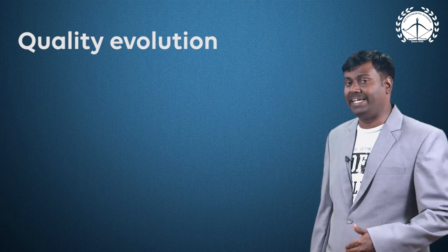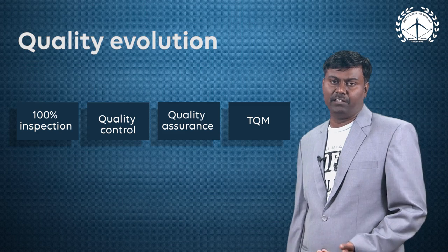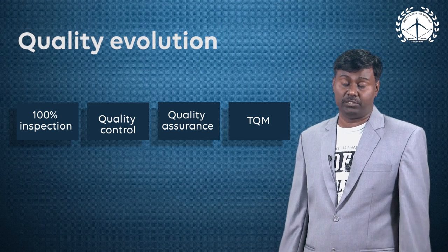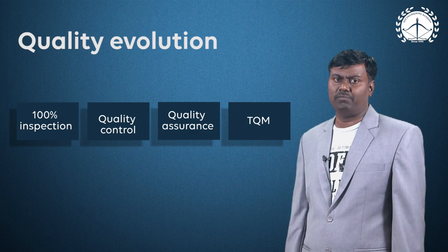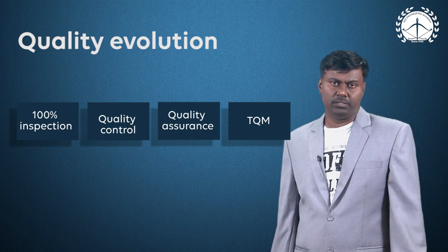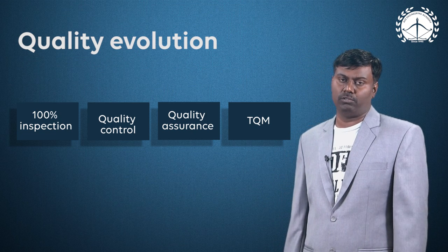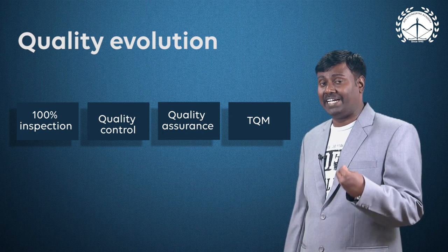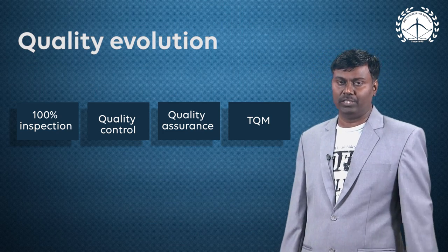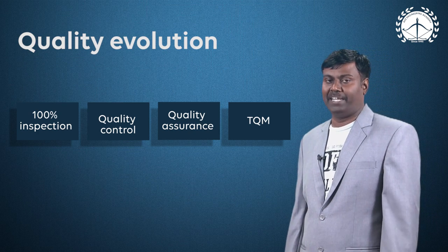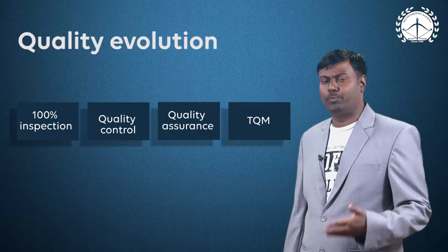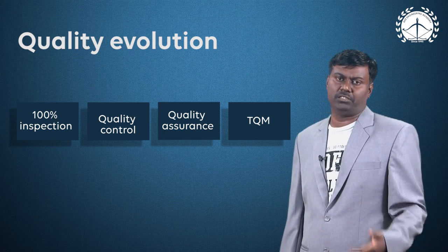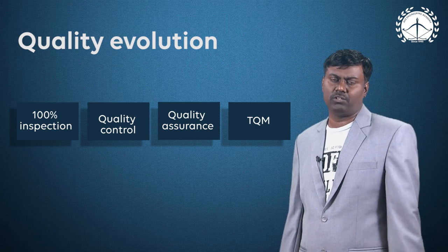Quality evolution started from 1920 and always continues. First was 100% inspection, which is not recommended because it is time-consuming and costly. Then came quality control, involving control charts and sampling. Then quality assurance — setting up standards for the process, because if the process is good, the output will automatically be good. Finally, Total Quality Management (TQM) focuses on continuous improvement, incorporating tools and contributions from western and eastern gurus, including Just-in-Time.